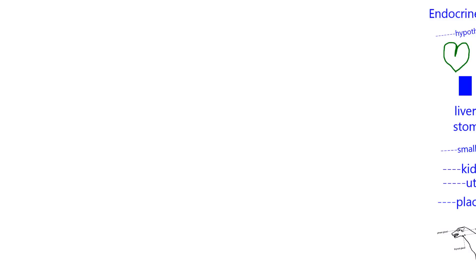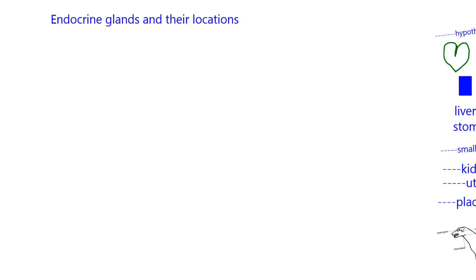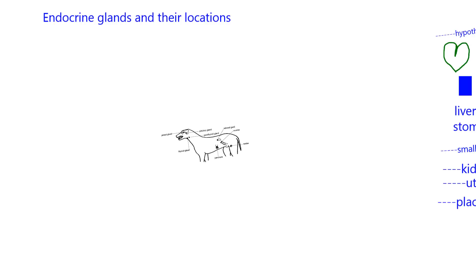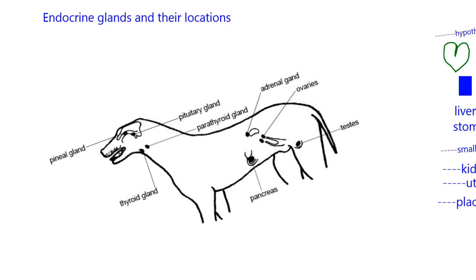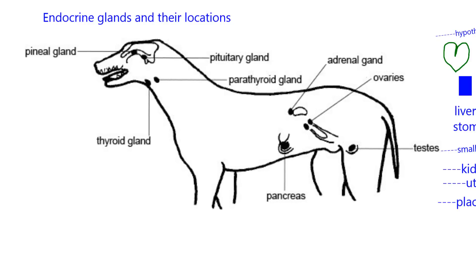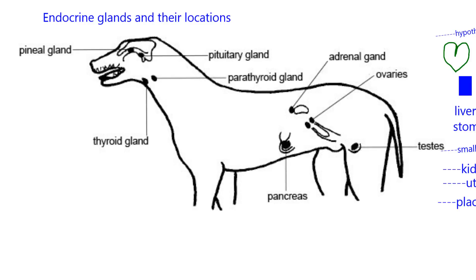Let's name the endocrine glands, and also endocrine tissues, and put their relative locations in a drawing of a dog. Although we have a dog on the screen, this would also apply to cats and horses, our other two main companion animals that we discuss, and it could also apply to most mammals that we deal with.